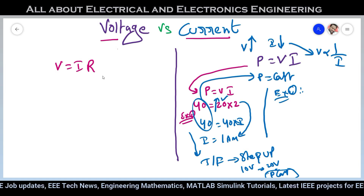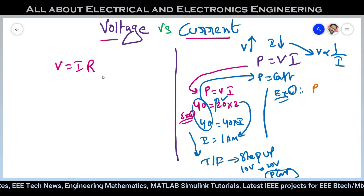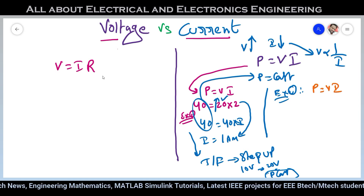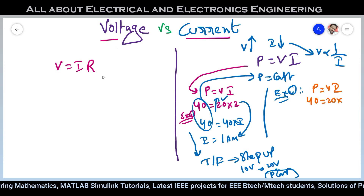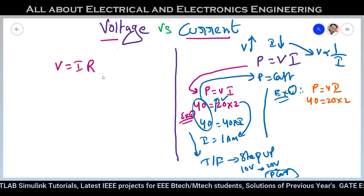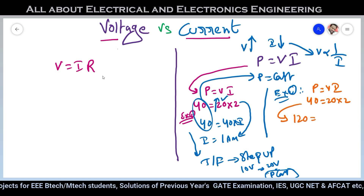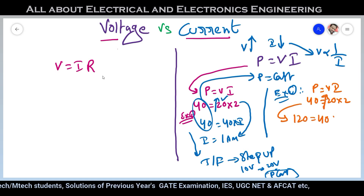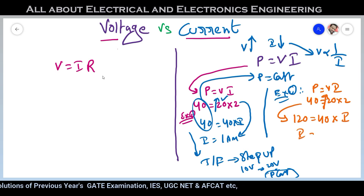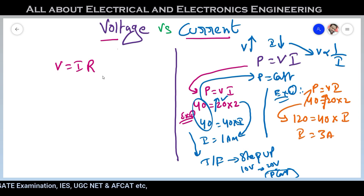Here is another example for clearer explanation. Again starting with P = VI, taking 40 = 20 × 2. In this second example, I am increasing both power and voltage: power increases from 40 to 120W, and voltage increases from 20 to 40V. What is the current? I equals 120 divided by 40, giving you 3A. So if you increase both power and voltage, current also increases.